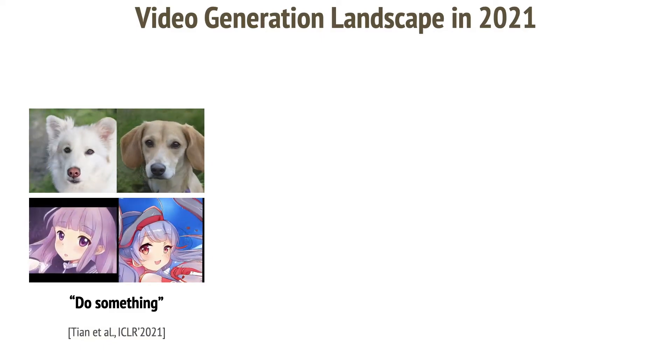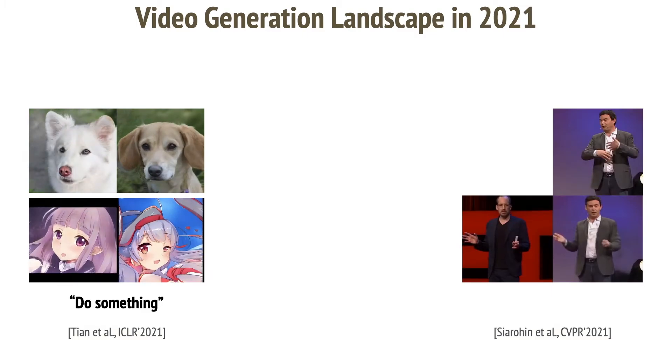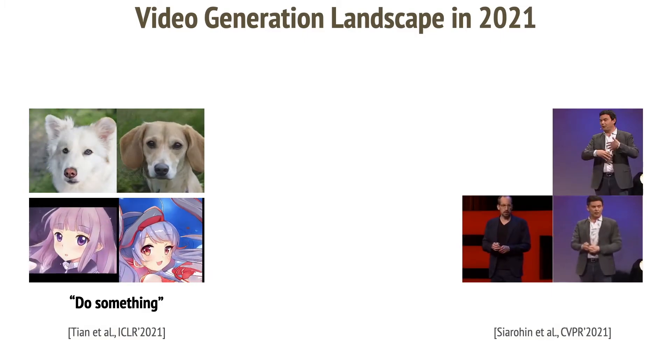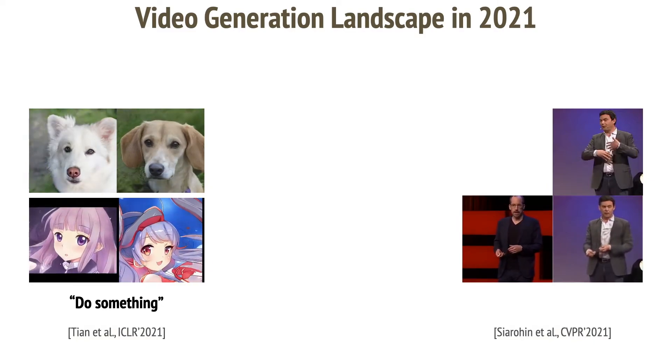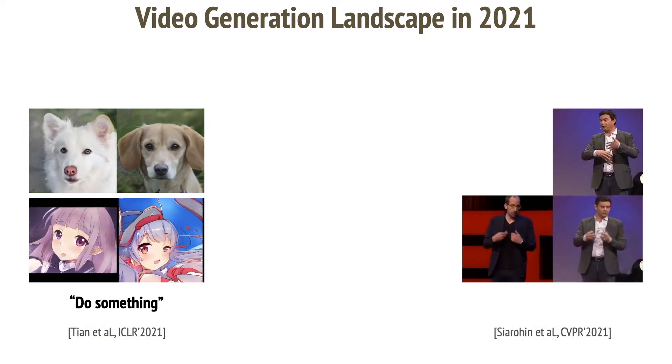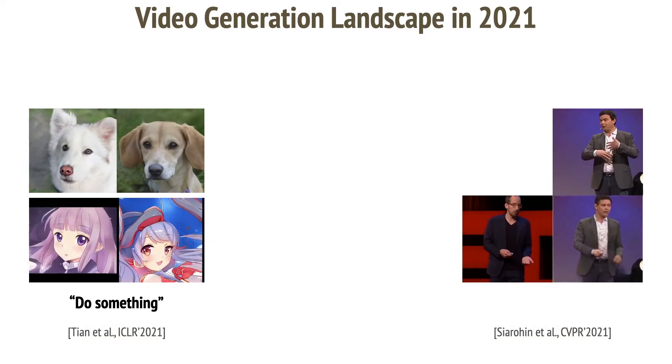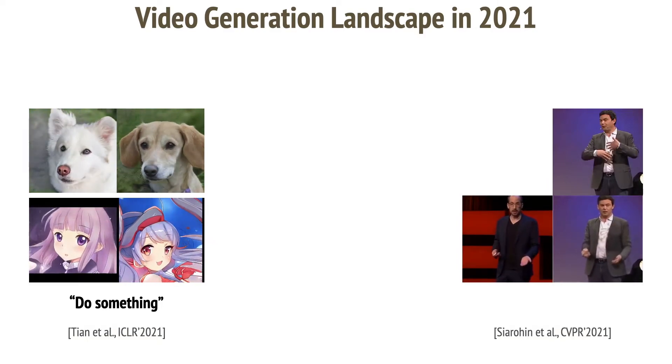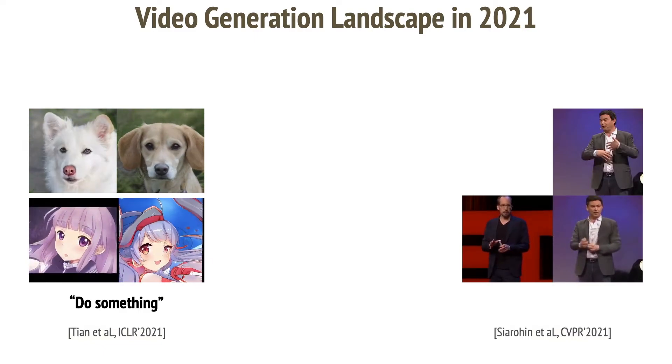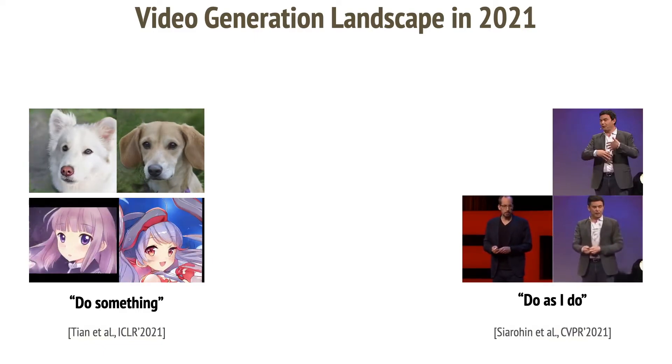Then we also have animation methods. Given the driving sequence, we generate a video by retargeting motions to the source frame. The driving video has to be provided before generation. The generated sequence follows the driving sequence exactly, and we therefore refer to this way as do as I do generation.